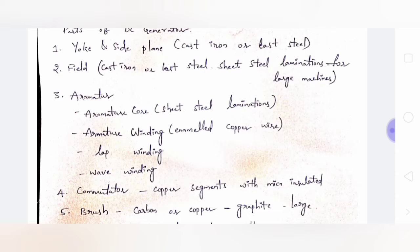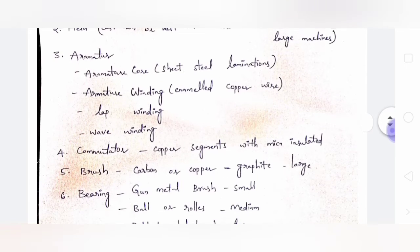The field is the stator and the armature is the rotor. The armature core is made up of silicon steel lamination. Armature winding uses enameled copper wire. There are two types of winding: lap winding and wave winding. In lap winding, the total winding is divided into parallel paths equal to the number of poles — two poles gives two paths, four poles gives four paths. In wave winding, there are always two parallel paths.